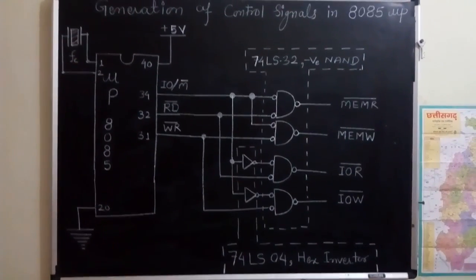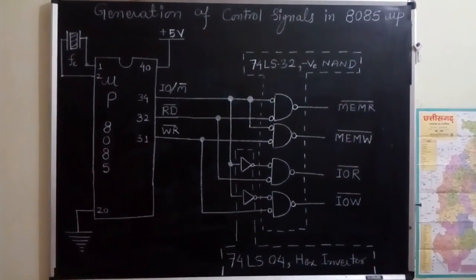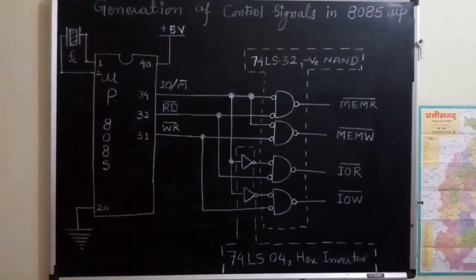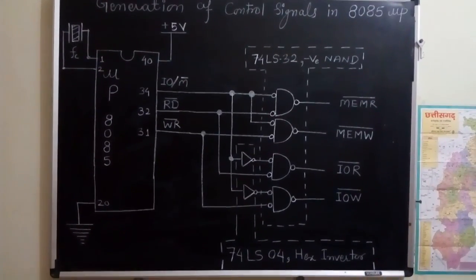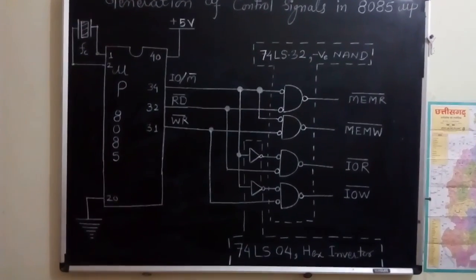And whenever IOR read or IOR write is to be generated, this IOM bar is activated high, thus it should be inverted and again applied to the negative NAND. And in this way,